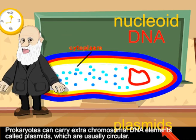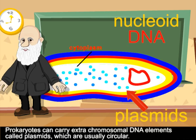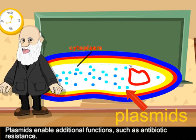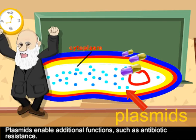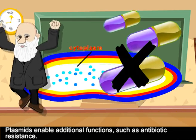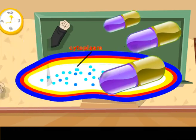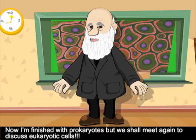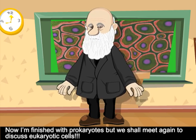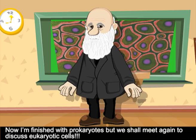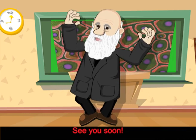Prokaryotes can carry extrachromosomal DNA elements called plasmids, which are usually circular. Plasmids enable additional functions, such as antibiotic resistance. Now I am finished with prokaryotes, but we shall meet again to discuss eukaryotic cells. See you soon.